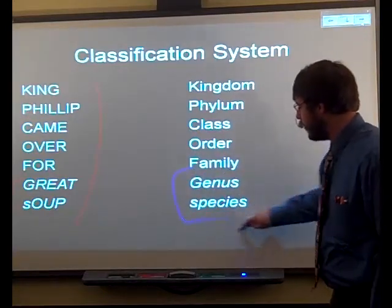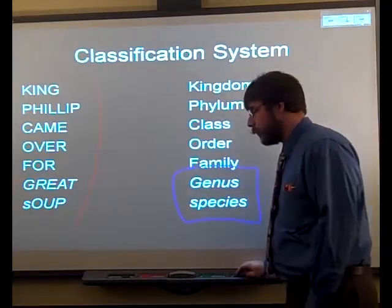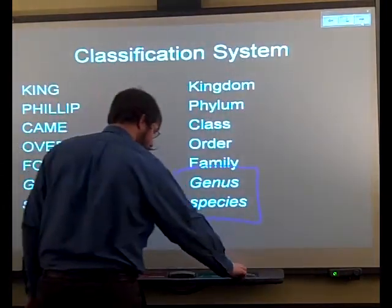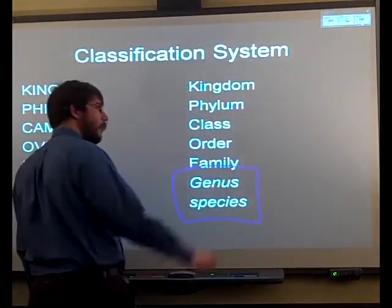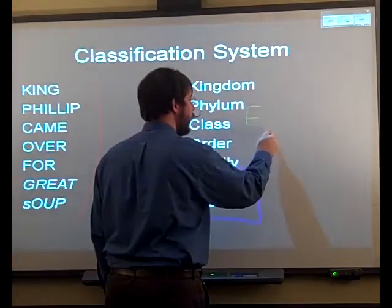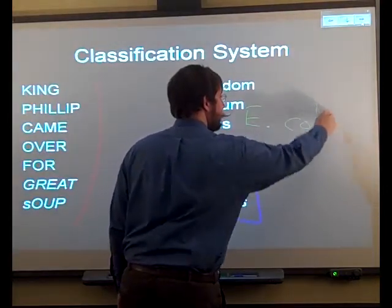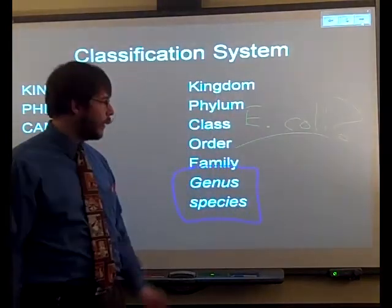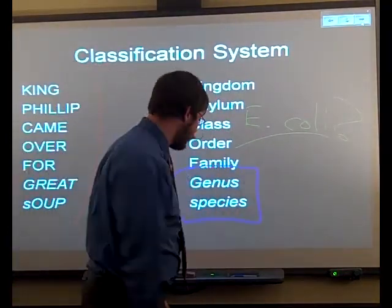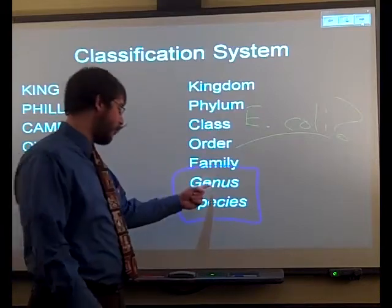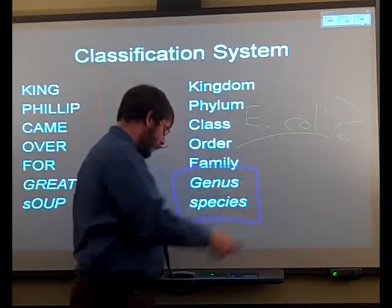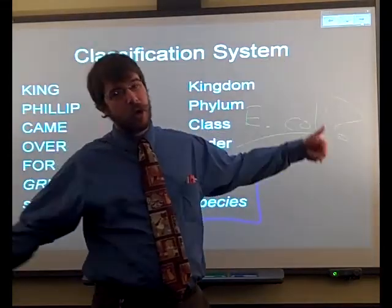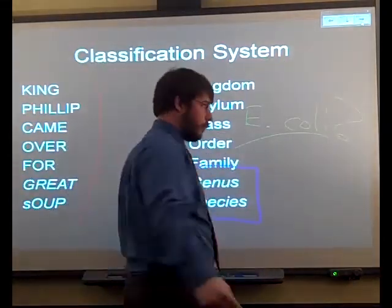When we name things using the two-name naming system, we write the genus and the species, and the species has to be in lowercase. For example, you've heard of E. coli. That would be a type of bacterium. The E is for Escherichia, which is actually the genus. Coli is the species because it's the Escherichia genus that lives in your colon.